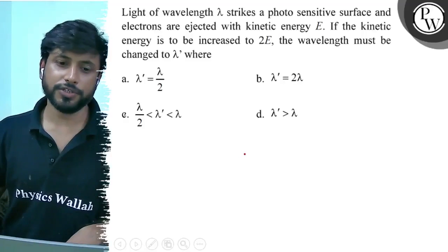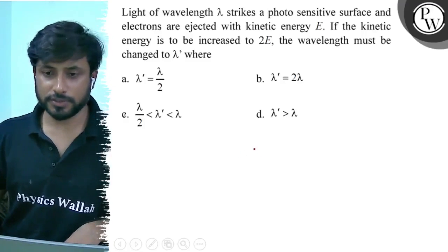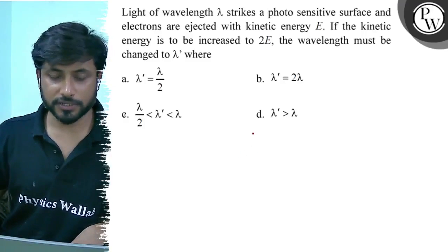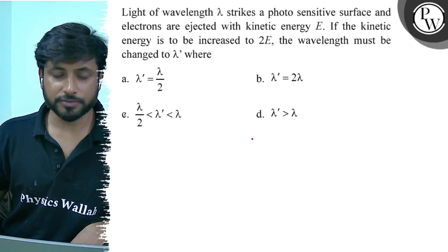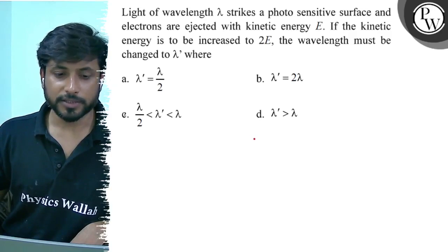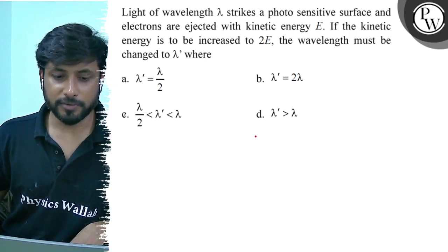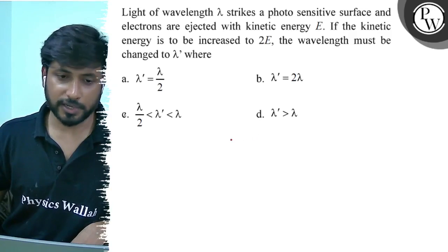Hello bachcho! Let us see this question. Light of wavelength lambda strikes a photosensitive surface and electrons are ejected with kinetic energy E. If the kinetic energy is to be increased to 2E, the wavelength must be changed to lambda dash, where lambda dash equals lambda by 2, lambda dash equals two lambda, lambda dash is greater than lambda by 2 and less than lambda, or lambda dash is greater than lambda.